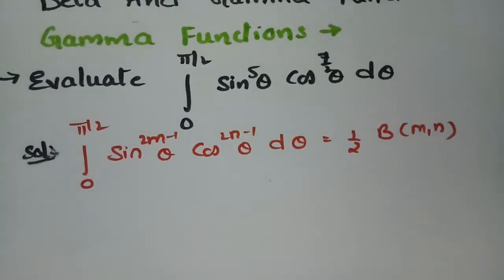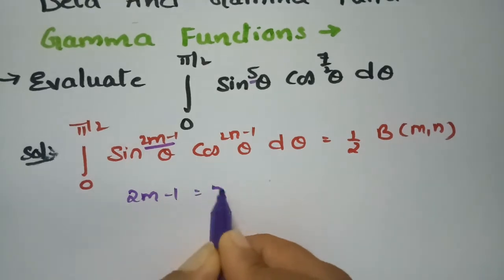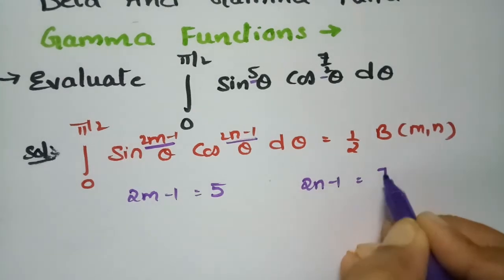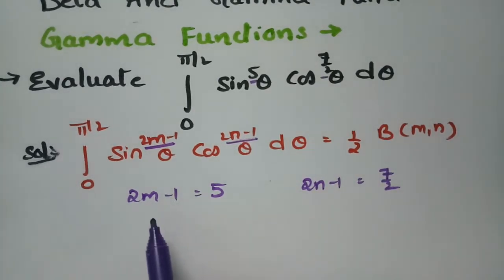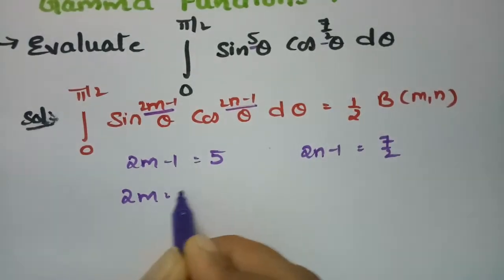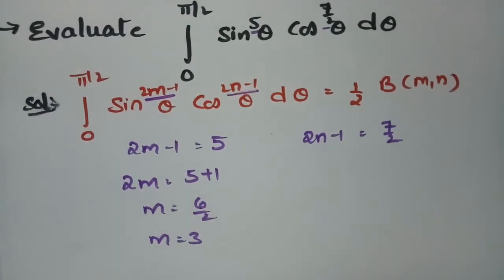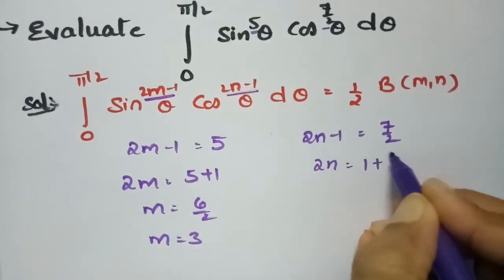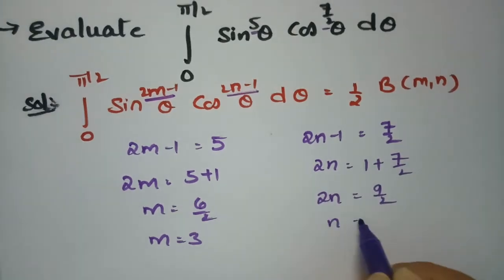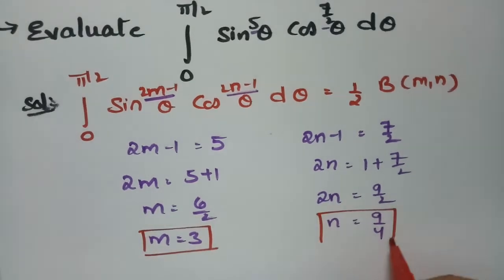We equate 2m minus 1 = 5, giving 2m = 6, so m = 3. For the cosine exponent, 2n minus 1 = 7/2, so 2n = 9/2, giving n = 9/4. Now that we have m = 3 and n = 9/4, we substitute these values into the formula.